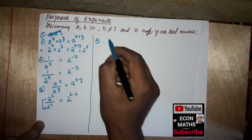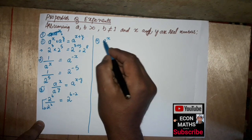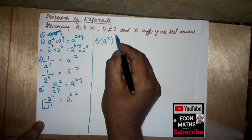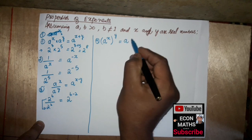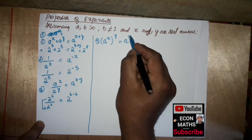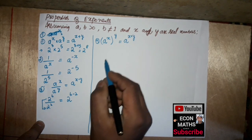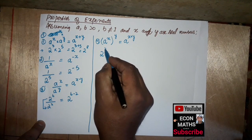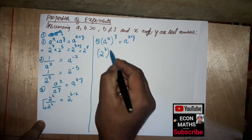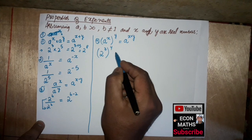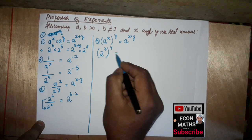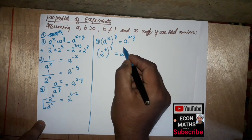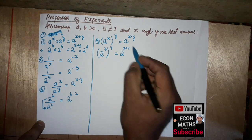The fourth property is: a to the power x, raised to the power y, equals a to the power x times y. For example, 2 cubed raised to the power 4 equals 2 to the power 3 times 4.